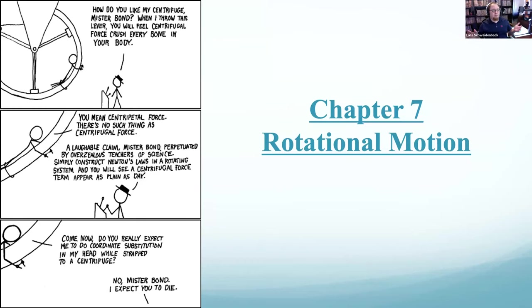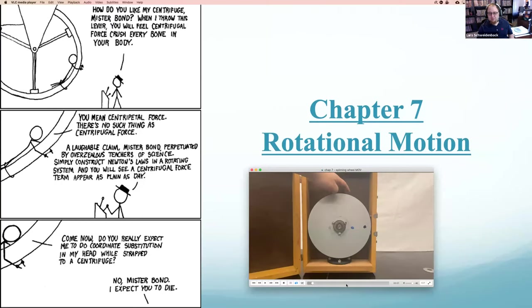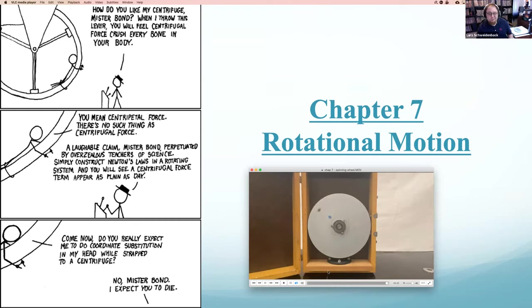Hello, welcome to today's day of physics. Today we're going to start Chapter 7, which is called Rotational Motion. Chapters 7 and 8 are kind of a pair of chapters that go together — they're about spinning things. So far we've talked about things moving in a straight line. Now we're going to start talking about what happens when they're moving in a circle. Basically, everything we've covered already in this class, we're going to do it again, spinning. That's the short version.